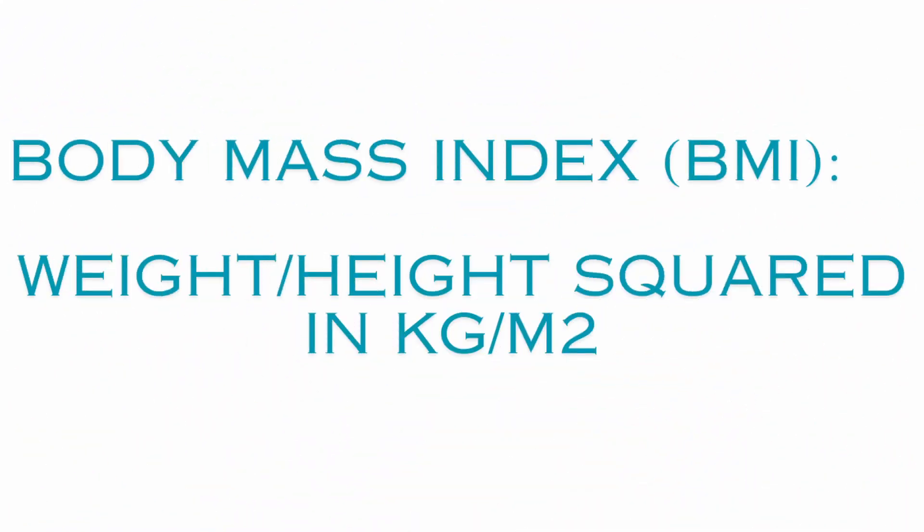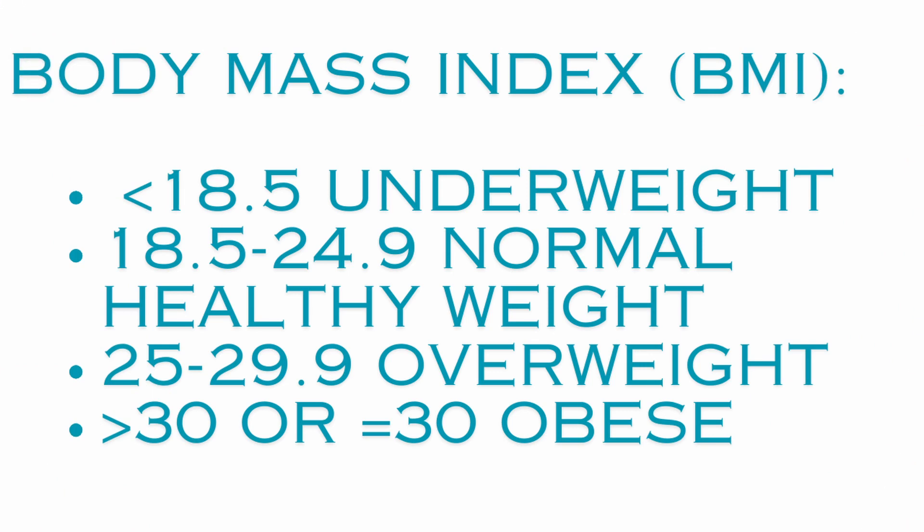The second method is the body mass index, or BMI — your weight divided by your height squared. Less than 18.5 means underweight. Between 18.5 and 24.9 is a healthy normal weight, which is what we want. Between 25 and 29.9 means you are overweight — not obese yet, but heading in that direction.